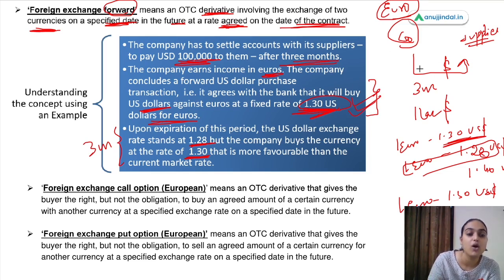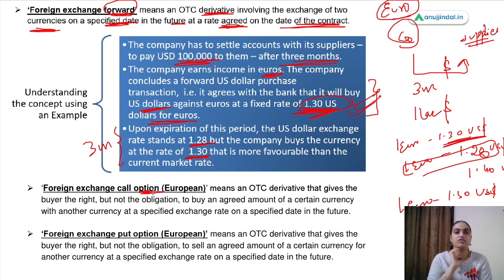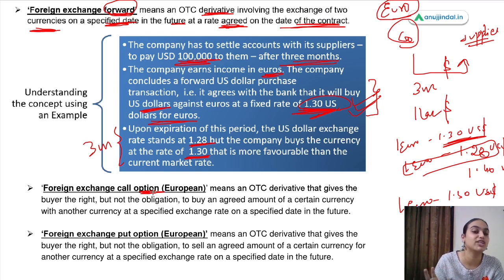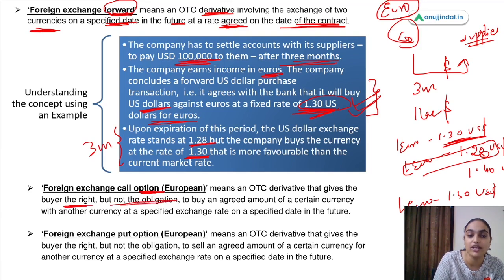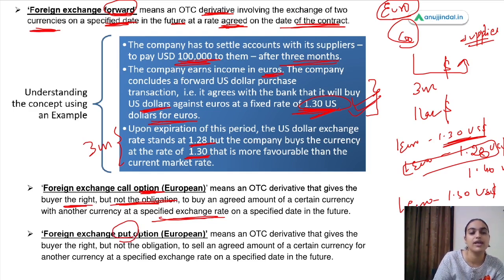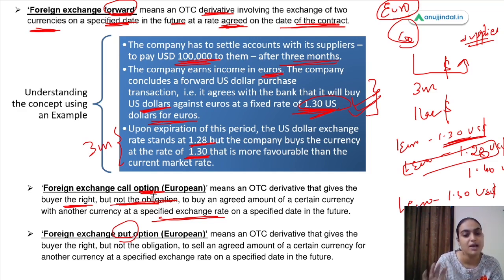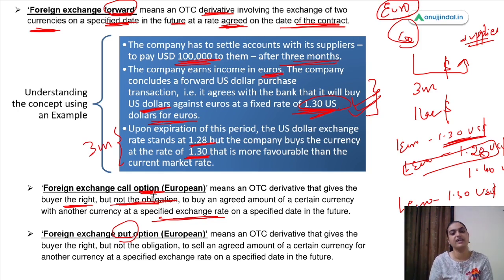Moving to foreign exchange options, which differ from forwards. In a forward, you have an obligation to adhere to the contract. But in a foreign exchange option, you have a right, not an obligation, which you can choose to exercise. A foreign exchange call option gives the buyer the right to buy a certain currency with another at a specified exchange rate. A put option is the option to sell. This is the basic difference between forwards and options.